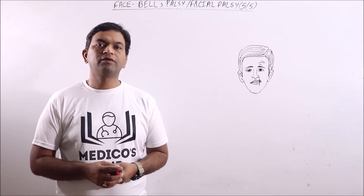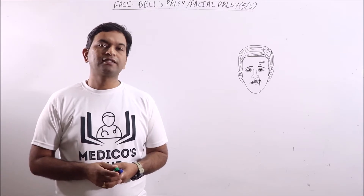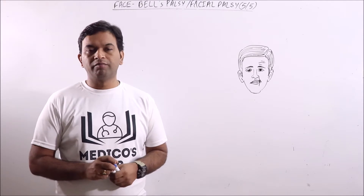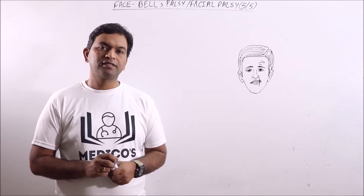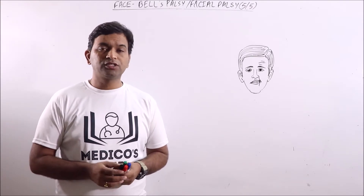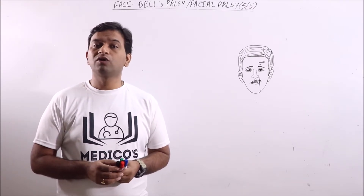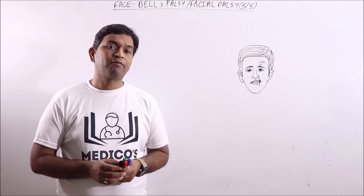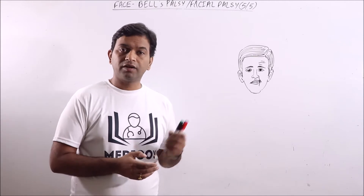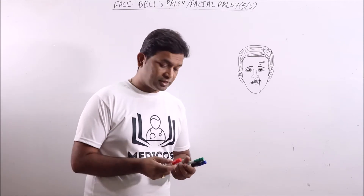Hello friends, I am Dr. Prashant Sharma and you are watching MediCoSar. This is my fifth lecture on face and I am going to discuss Bell's Palsy in this lecture. Bell's Palsy is a type of facial paralysis that results in inability to contract the muscles of the affected side. This is one of the most common causes of facial nerve paralysis of one side, with about 70% of cases being Bell's Palsy.